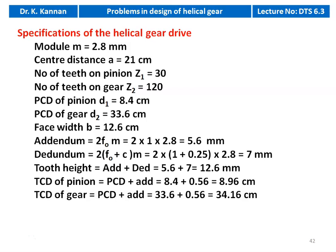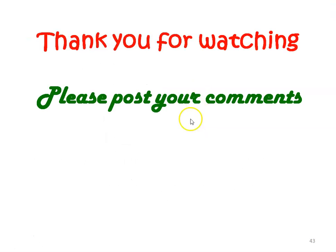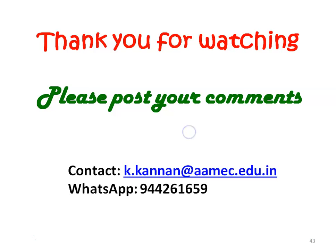Design specifications of the helical drive: module m = 2.8 mm, centre distance = 21 cm, teeth on pinion Z1 = 30, teeth on gear Z2 = 120, PCD of pinion = 8.4 cm, PCD of gear = 33.6 cm, face width = 12.6 cm. Addendum = 2 × fo × m = 2 × 1 × 2.8 = 5.6 mm. Dedendum = 2 × (fo + c) × m = 2 × 1.25 × 2.8 = 7 mm. Tooth depth = 5.6 + 7 = 12.6 mm. Tip circle diameter of pinion = 8.4 + 0.56 = 8.96 cm; tip circle diameter of gear = 33.6 + 0.56 = 34.16 cm. These are all the specifications of the drive. We will meet again in another video with two more helical gear design problems. Thank you for watching.